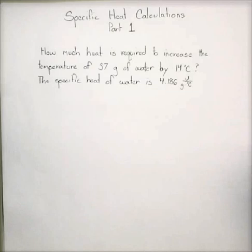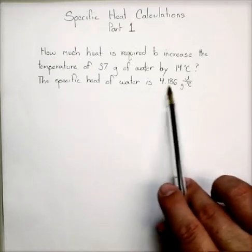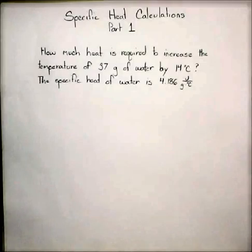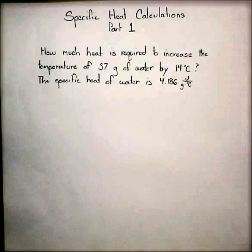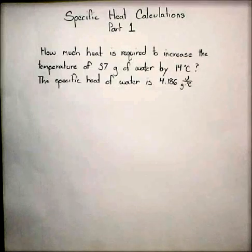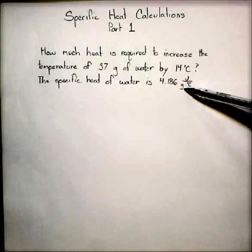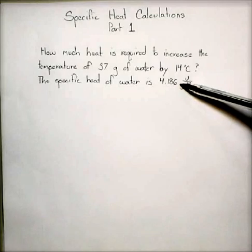And the key to this whole thing is this specific heat. So the specific heat of water is 4.186 joules per gram degrees Celsius. What this tells us is how much energy we have to add for all the various factors involved. So for every gram of water to increase the temperature of each gram by one degree requires 4.186 joules of energy.